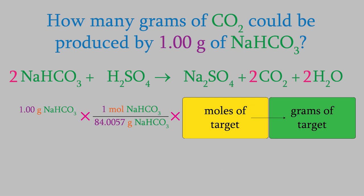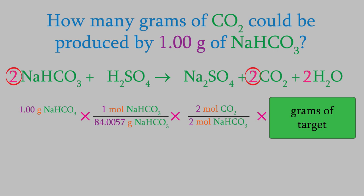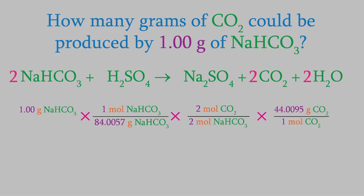Next, we'll convert to the moles of our target, CO2. This is where our balanced reaction comes in. If you look at the reaction, the coefficients tell you that 2 moles of sodium bicarbonate produce 2 moles of CO2. So that's our conversion factor. We want the moles of sodium bicarbonate to cancel out, so it will go in the denominator. Finally, we'll convert from moles of CO2 to grams using masses from the periodic table. CO2 weighs 44.0095 grams. All units drop out except for grams of CO2, giving us a final answer of 0.524 grams of CO2.